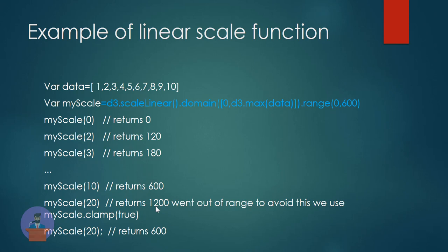If you want to avoid this then you can use the clamp function. When you provide an out-of-bound value, it will return the max range of the function. So if you provide input beyond your domain and you have used the clamp function, it will always return the max range value — in our case that will always be 600. So if I provide 30, 50, or 100, it will always return 600.